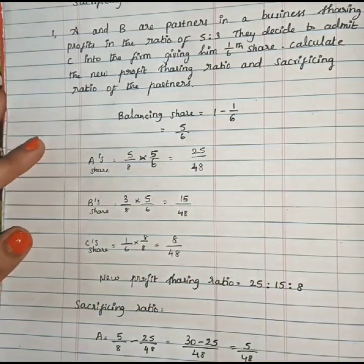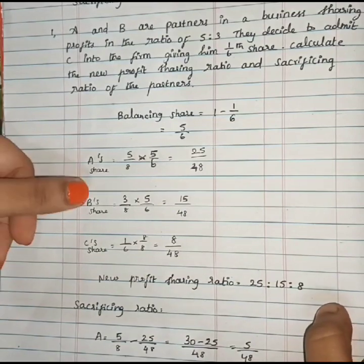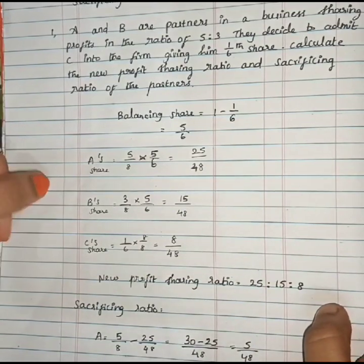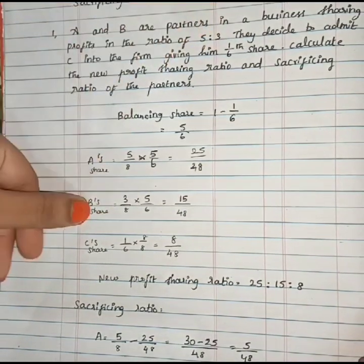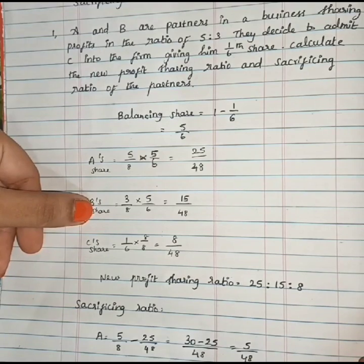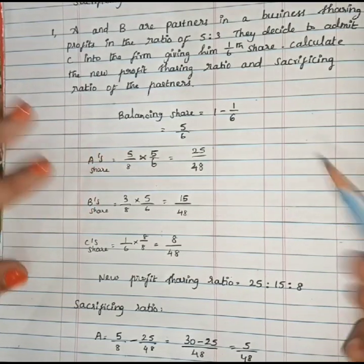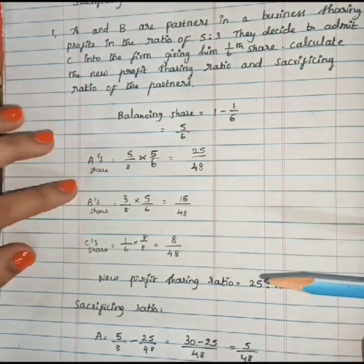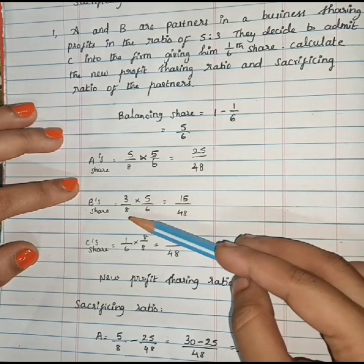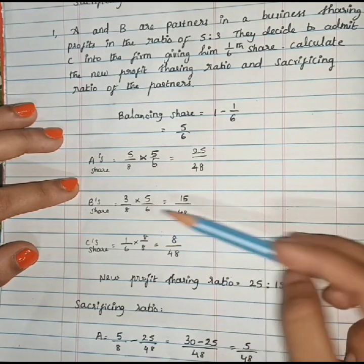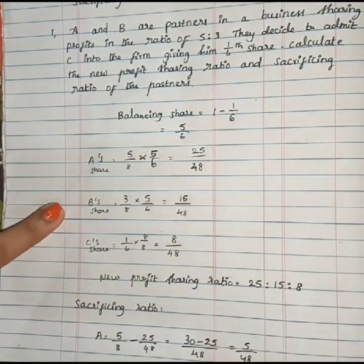Next, B's new share. B's old share is 3/8, multiplied by the balancing share of 5/6. So 3/8 × 5/6 = 15/48. B's new share is 15/48.